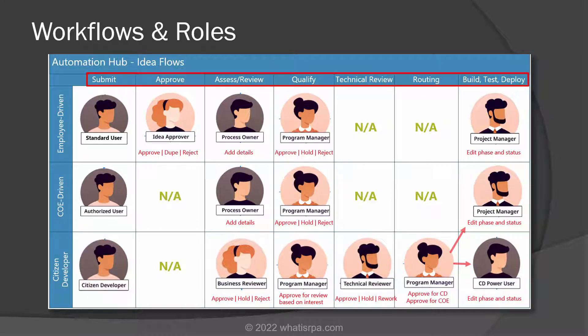The columns represent the workflow each idea would pass through. So notice we have submit, approve, assess and review, qualify, technical review, routing, and then finally build, test and deploy.